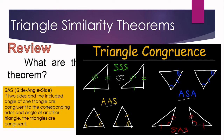When we have the SAS — side-angle-side — it means that if the two sides and the included angle of one triangle are congruent to the corresponding sides and angle of another triangle, then the two triangles are congruent by SAS congruence theorem.